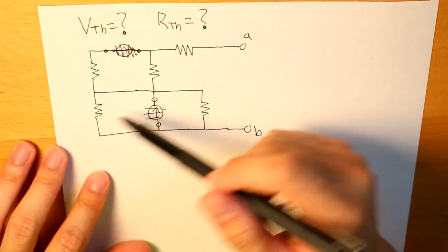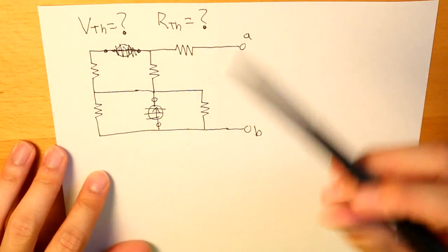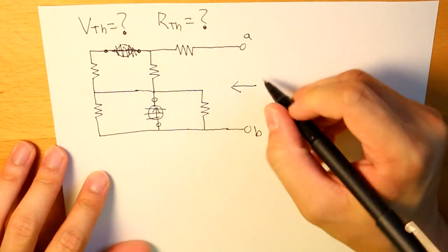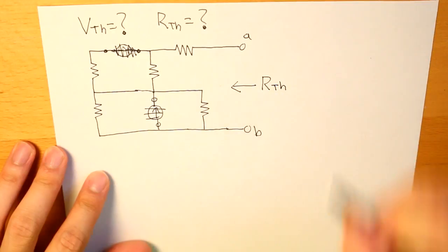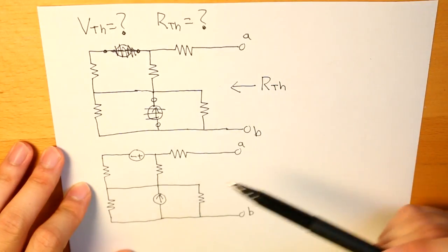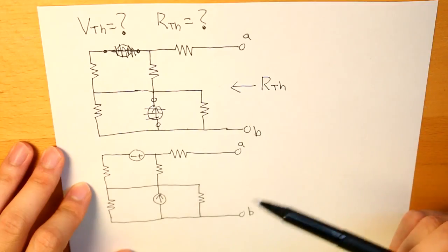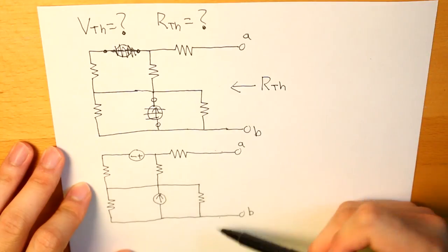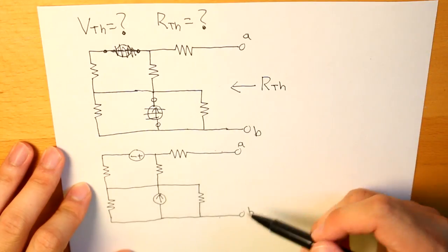total resistance of these five resistors and that is our Thevenin resistance. To find Thevenin voltage, we keep the independent sources active and simply we just find what the voltage across the two terminals are.